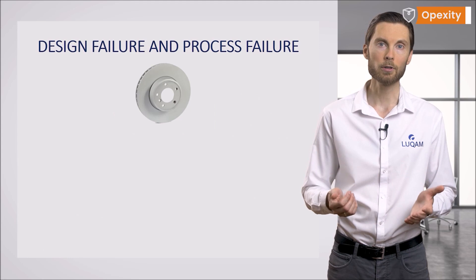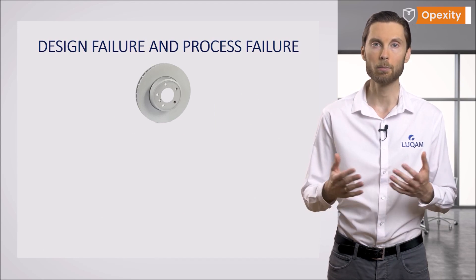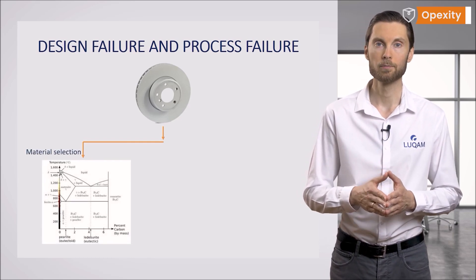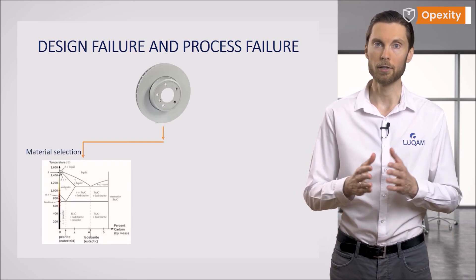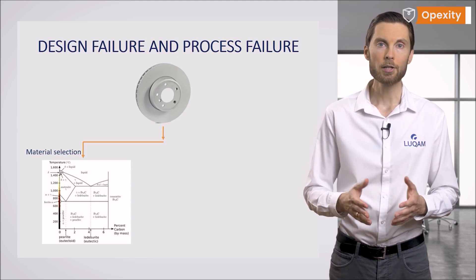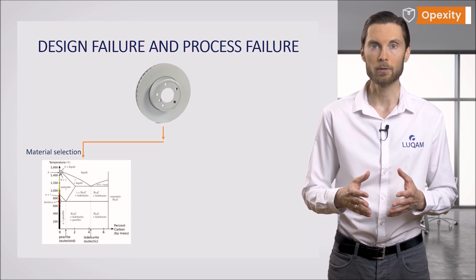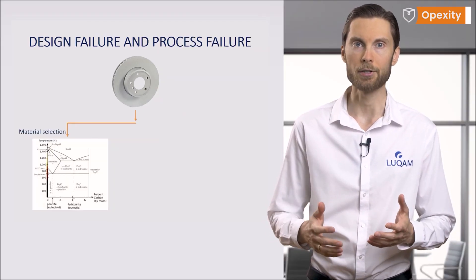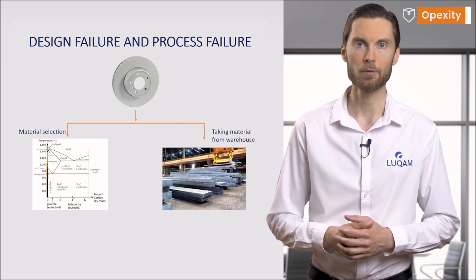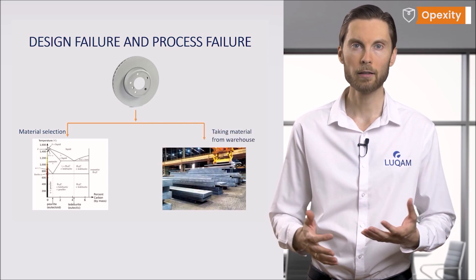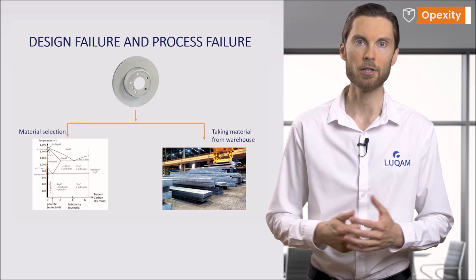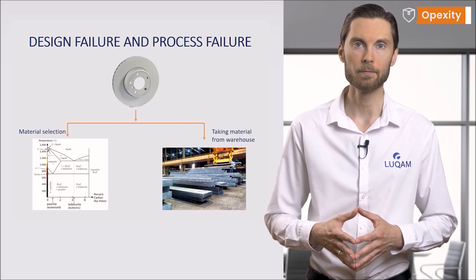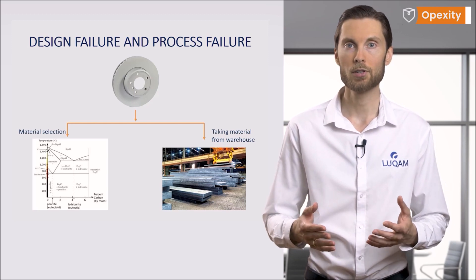To understand how this looks in practice, let's go back to the brake disc component analyzed in the first part of the FMEA material. In everyday vehicles, the temperature range of these parts is 0 to 350 degrees Celsius, so the material of the brake disc is very important. If it had been incorrectly or insufficiently defined at the design stage, it would be a design failure — and the analysis of this type of failure is the DFMEA's speciality.